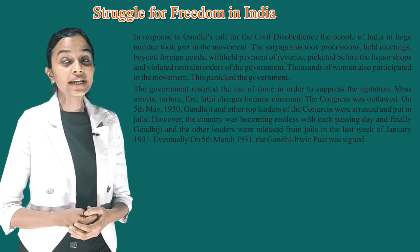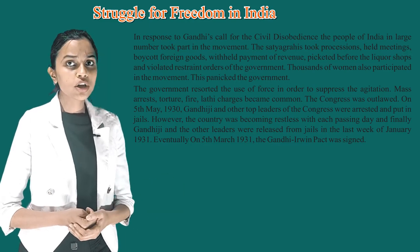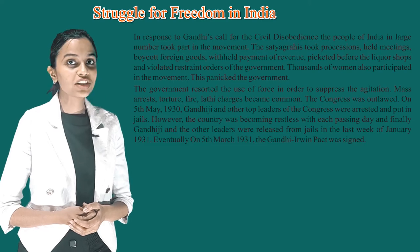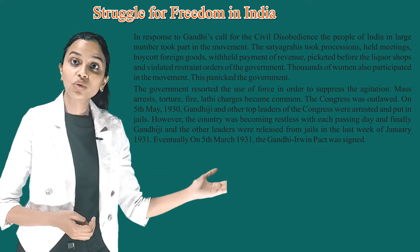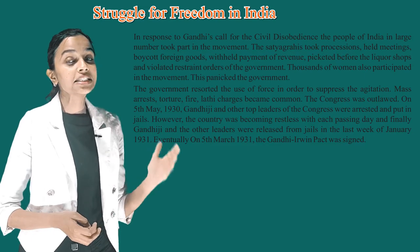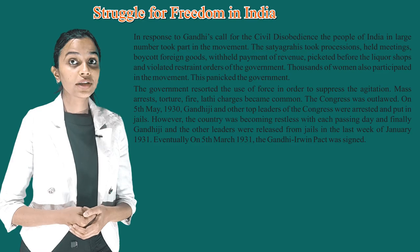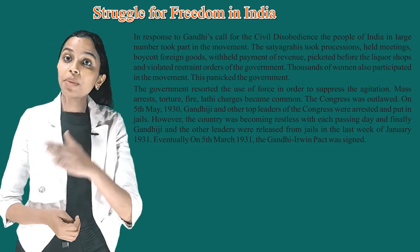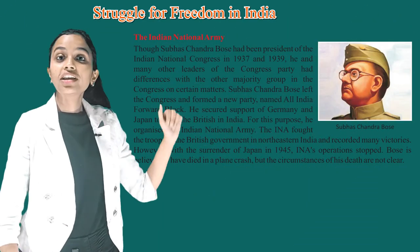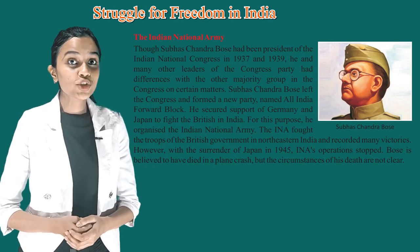However, the country was becoming restless with each passing day. Finally, Gandhiji and other leaders were released from jail in the last week of January 1931. Eventually, on 5th March 1931, the Gandhi-Irwin Pact was signed.